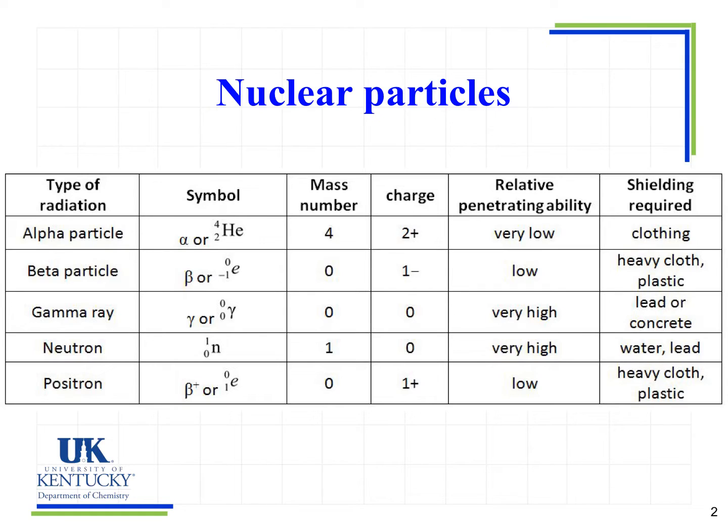So here we notice that we have an alpha particle that looks like a helium atom, mass and charge, penetrating ability is very low, and then the shielding required, which for alpha particles is simply clothing or a thick piece of paper, can stop alpha particles.